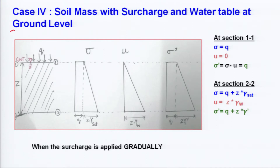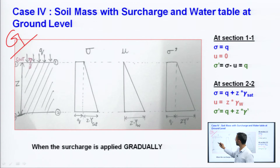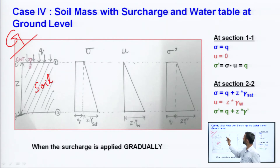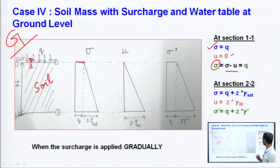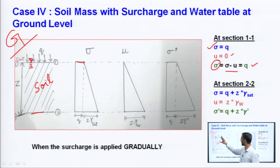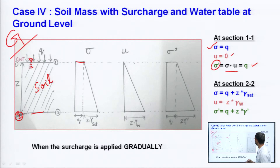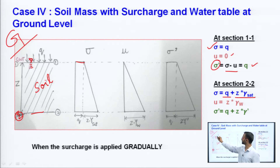For the gradual case with soil of height z and sections 1-1 and 2-2: at section 1-1, total stress equals Q, pore water pressure is 0 (no rise in piezometer), and effective stress equals Q. At section 2-2, total stress is Q + z × γ_saturated, because the soil mass is completely saturated due to the groundwater table at section 1-1.